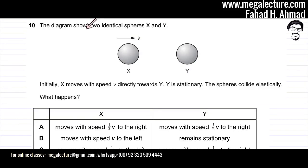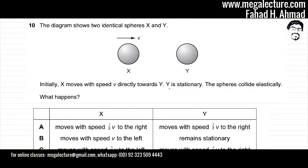The diagram shows two identical spheres X and Y. Initially, X moves with speed V directly towards Y, and Y is stationary, meaning Y has an initial velocity of 0. The spheres collide elastically.